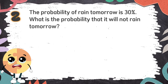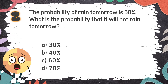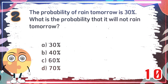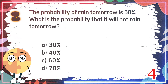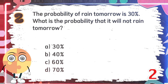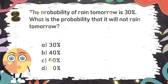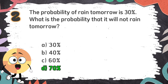Number 2. The probability of rain tomorrow is 30%. What is the probability that it will not rain tomorrow? The choices are A. 30%, B. 40%, C. 60%, D. 70%. The correct answer is D. 70%.